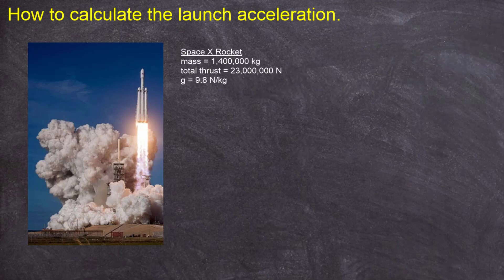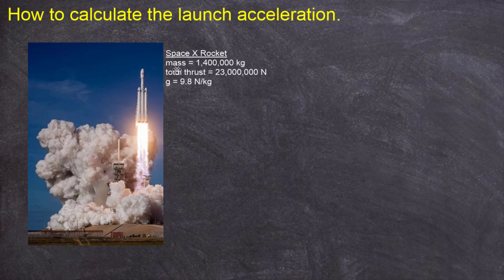The rocket has a mass of 1,400,000 kilograms. It's got a total thrust, that is the upward force, of 23 million newtons. And the gravitational field strength near the surface of the Earth is 9.8 newtons per kilogram.